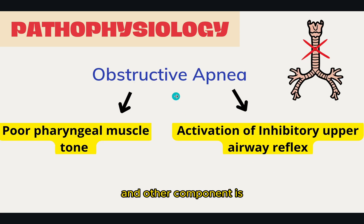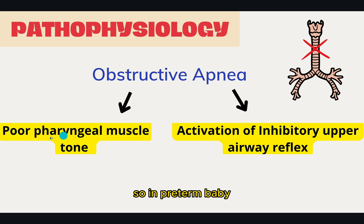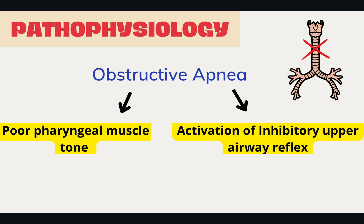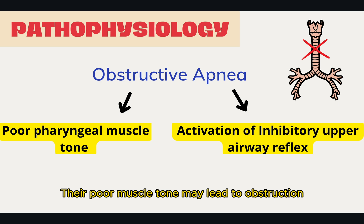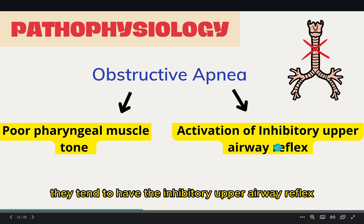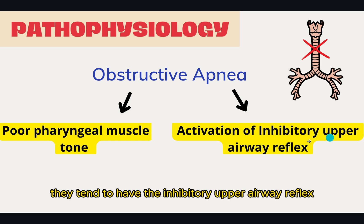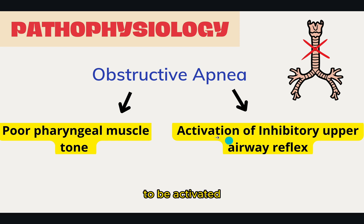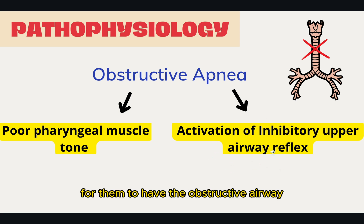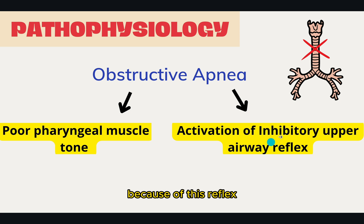The other component is obstructive apnea. In preterm babies, they have poor pharyngeal muscle tone; therefore when they sleep and lie down, the poor muscle tone may lead to obstruction. Also, in premature babies, they tend to have the inhibitory upper airway reflex activated, which means when some irritant is there, it is easier for them to have obstructive airway because of this reflex.